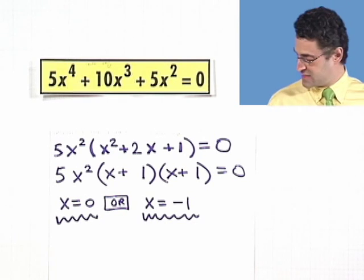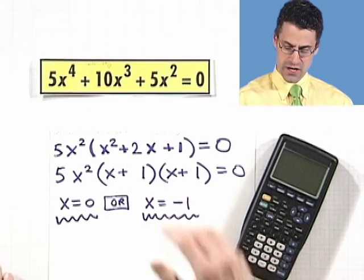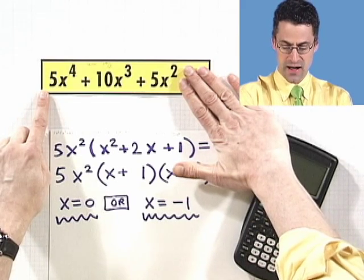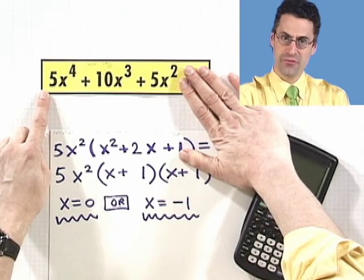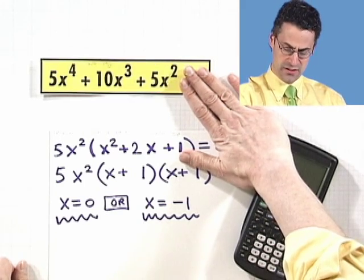You can actually check this on a graphing calculator. Type in the function y equals 5x to the fourth plus 10x cubed plus 5x squared, graph it, and look for where it crosses the x-axis — where the zeros are. If you produce a table of values, you can see it's 0 precisely when x equals 0 and x equals negative 1. So we are home free. Let's try another example.